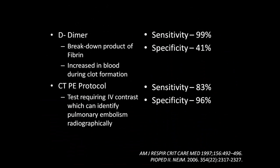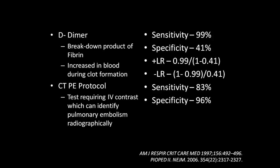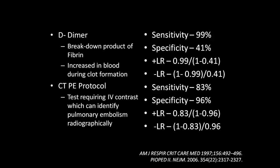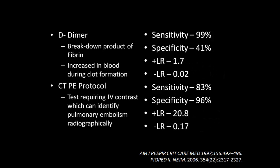For each of these tests, we can calculate positive and negative likelihood ratios. For D-dimer, the positive likelihood ratio is the sensitivity, 0.99, divided by 1 minus the specificity, which is 0.41. The negative likelihood ratio would be 1 minus the sensitivity over the specificity. The same calculation applies for the CTPE protocol. If we calculate these numbers out, we get these likelihood ratios.